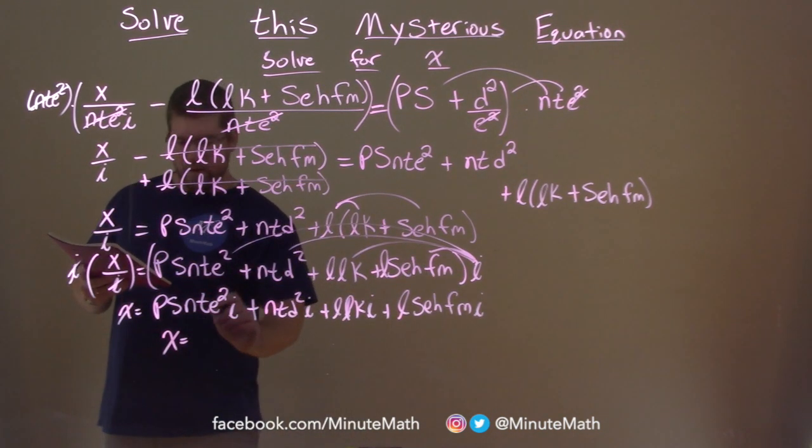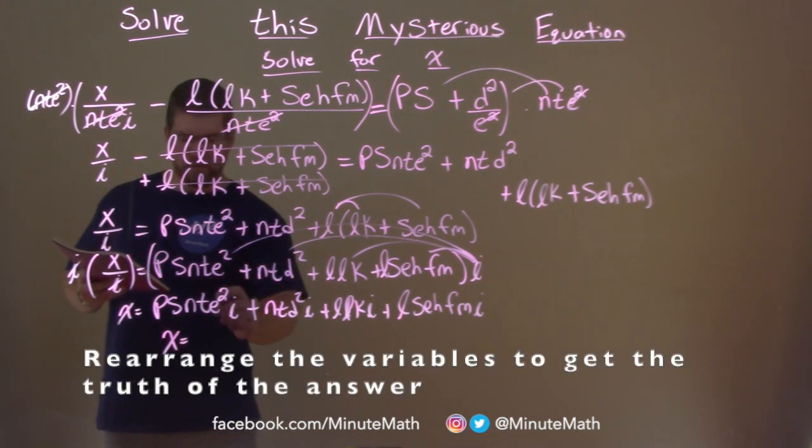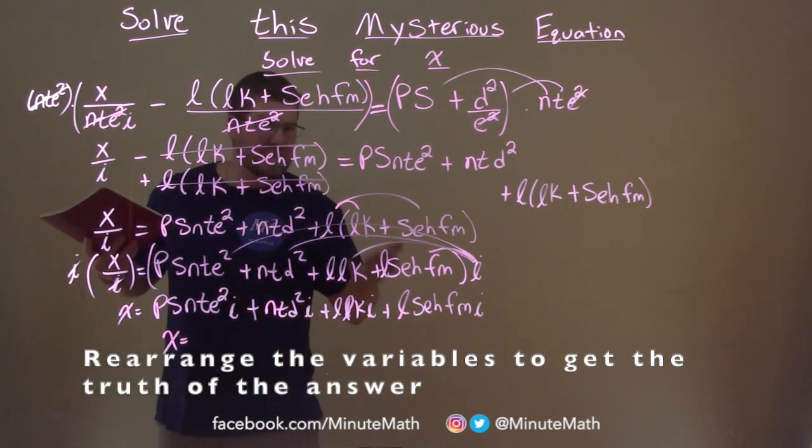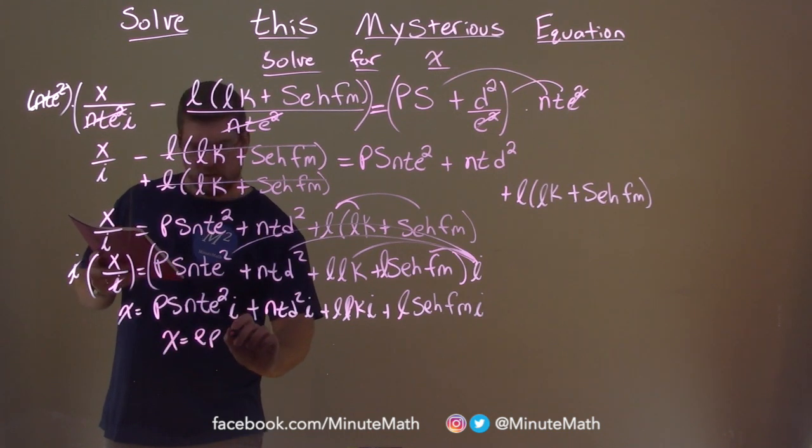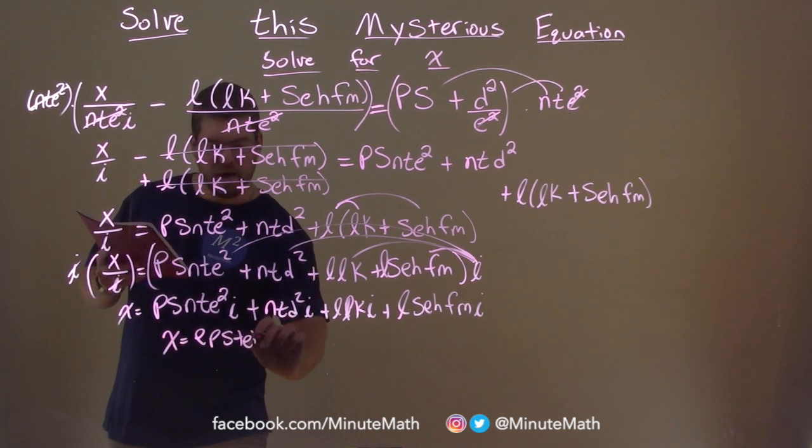We're going to rearrange this and get rid of e squared. So e squared, we know, is e times e. So we have e, p, s, t, e, i, n.